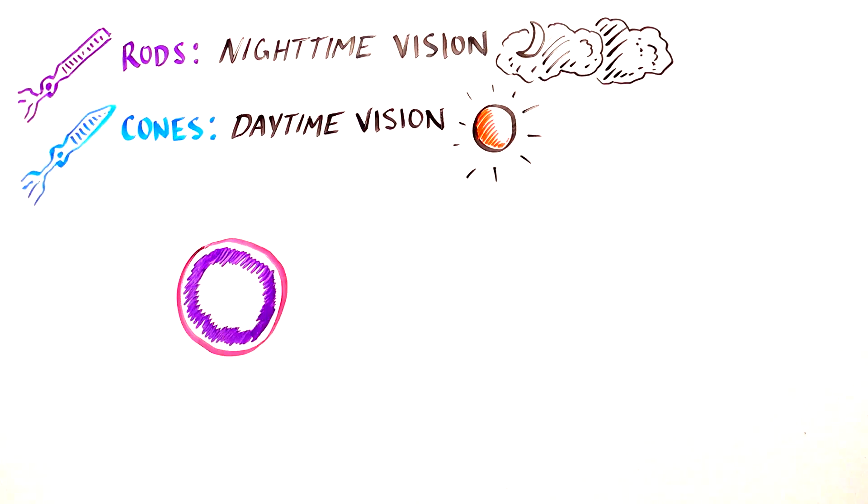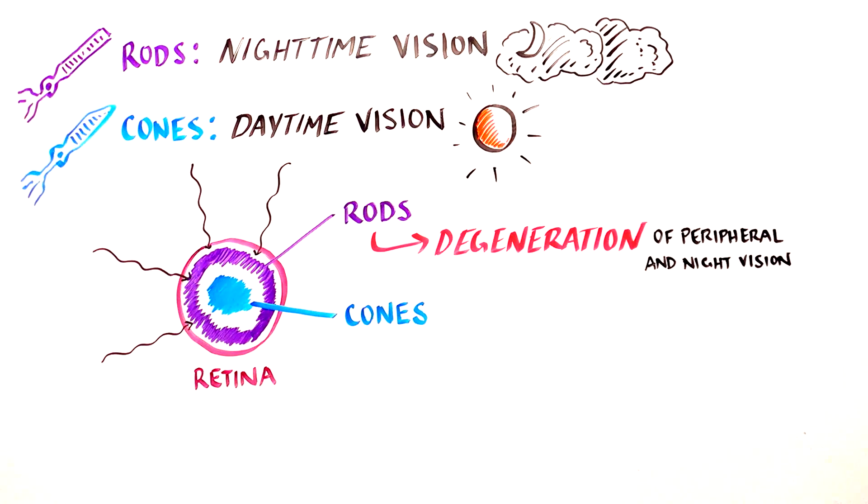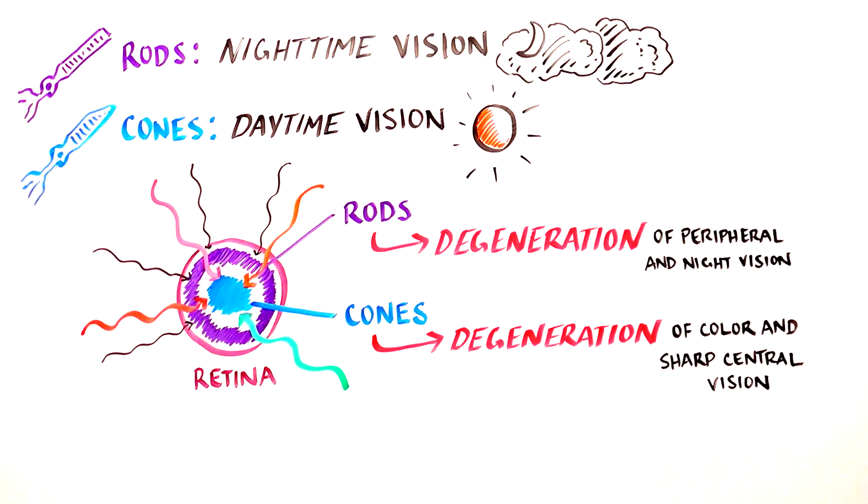Because rods are concentrated in the outer portion of the retina and are triggered by dim light, their degeneration affects peripheral and night vision. When the more centrally located cones, responsible for color and sharp central vision, degenerate, color perception and central vision are lost.